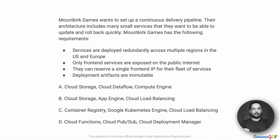In this project scenario, Monkirk Games wants to set up a continuous delivery pipeline. Their architecture includes many small services that they want to be able to update and rollback quickly. Monkirk Games has the following requirements: services are deployed redundantly across multiple regions in the US and Europe; only front-end services are exposed on the public internet; they can reserve a single front-end IP for their fleet of services; and deployment artifacts are immutable.